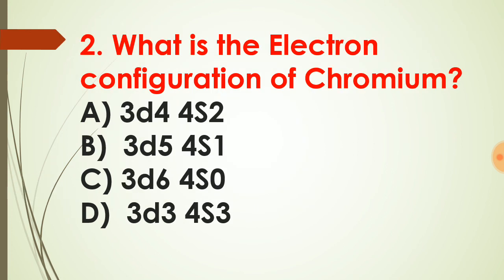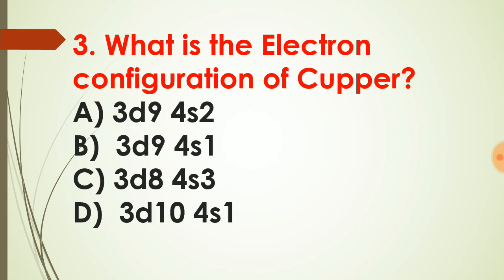Question number two: what is the electron configuration of chromium? Chromium and copper do not follow the regular pattern of electron configuration because of some exception. You need to find why they do not follow the regular pattern. Option A — 3D4 — means it has a part before 3D4, because electron configuration starts from 1S2. So a complete configuration for option A is: 1S2, 2S2, 2P6, 3S2, 3D4, and 4S2. I will be explaining questions two and three further in the comment section and upcoming videos.